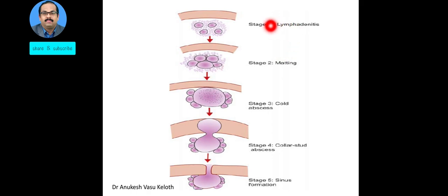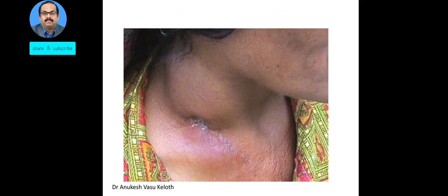To summarize the stages: stage of lymphadenitis, stage of matting, stage of cold abscess, and the fourth stage where it pierces the deep fascia to become superficial, followed by the final stage of sinus formation. A simplified diagram is provided for easy reference. This image shows an actual tubercular sinus, with a mild bluish tinge seen all around the edges.